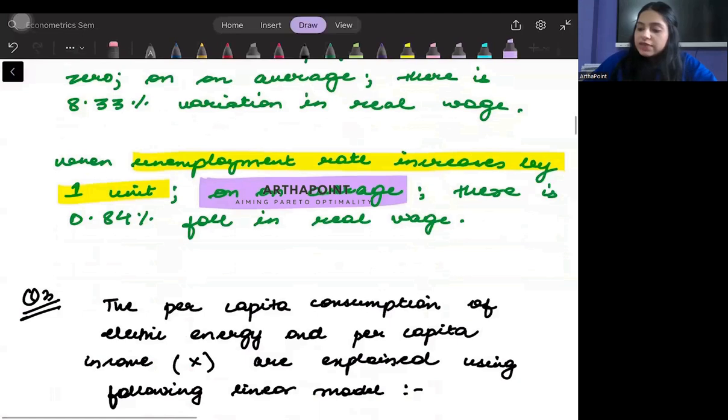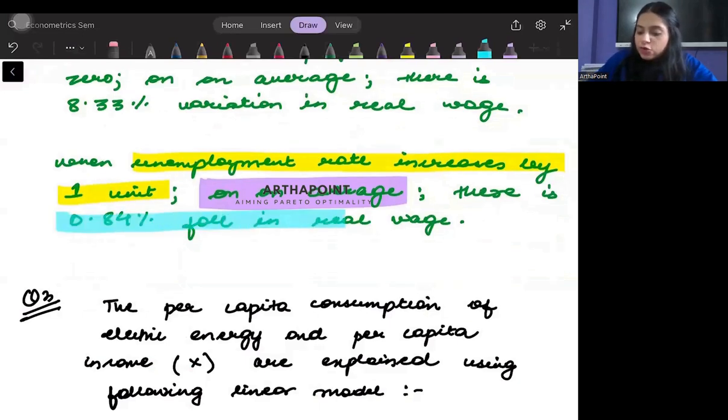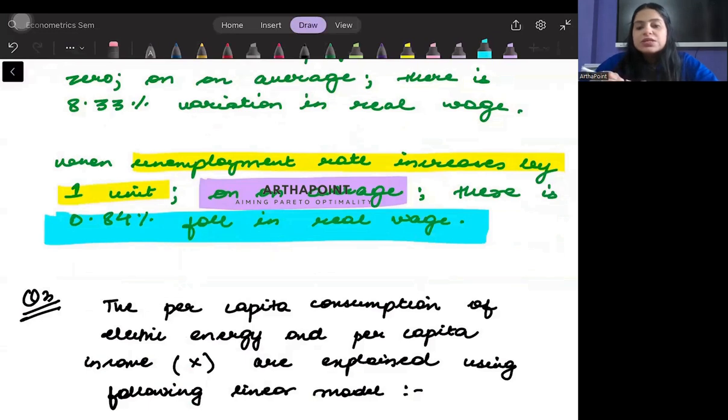So we can say on an average there will be 0.84 percent fall in the real wage. There will be 0.84 percent fall in the real wage.